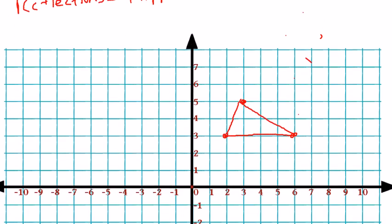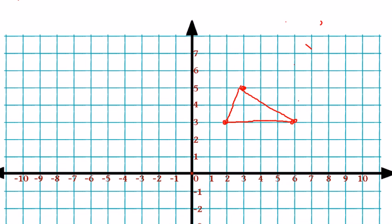So let's try a couple examples of each transformation. Let's say we wanted to take triangle ABC and translate it two units to the right. So we are going to translate triangle ABC two units to the right. So how will we go about doing that?